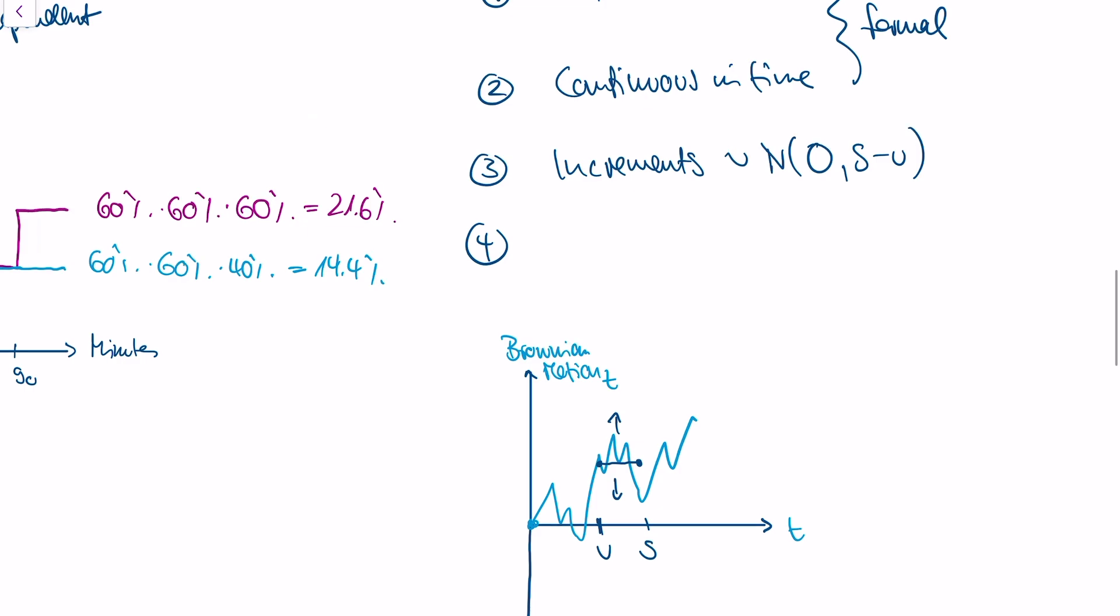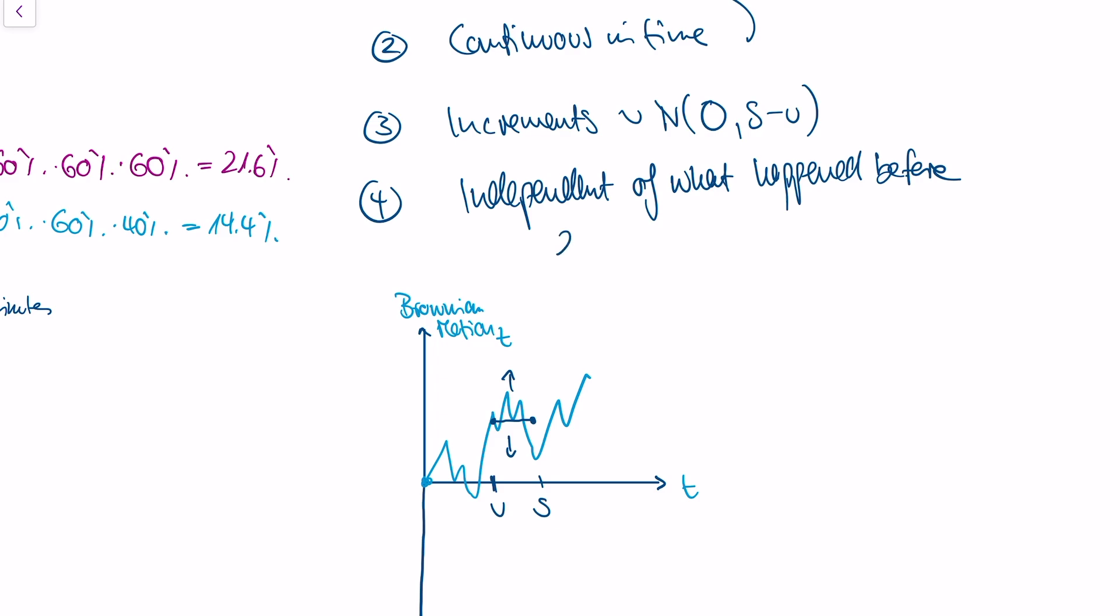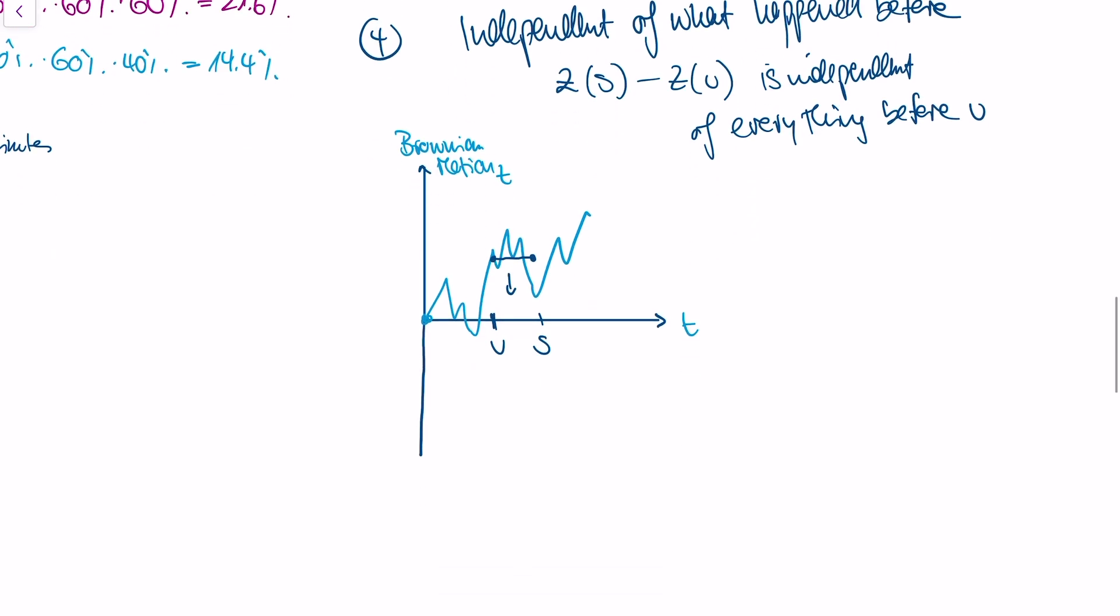The fourth property of Brownian motion is that it's independent of what happened before. In math: increments of the Brownian motion, so z at time s minus z at time u, is independent of everything that happened before u. What does that mean? Let's go back to our graph. This is my Brownian motion, this is my s, and this is my u. When I am at point u and I want to make predictions of what's going to happen in this increment, it doesn't help me to look at what happened prior to u, because everything that happens in the future is independent of what happens in the past.